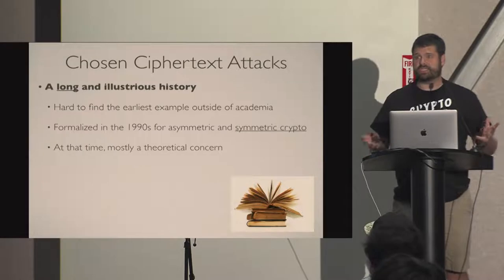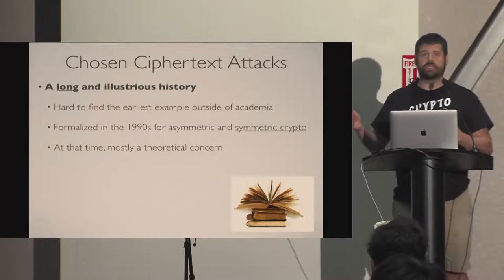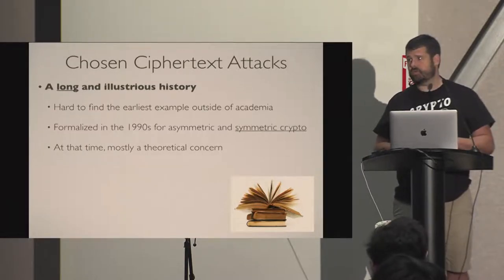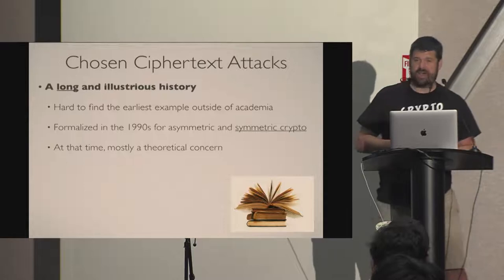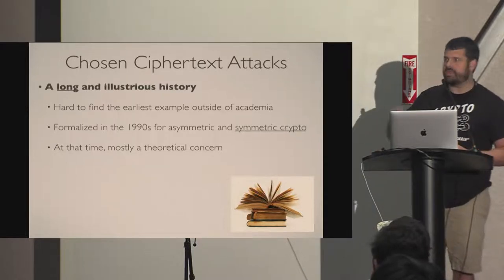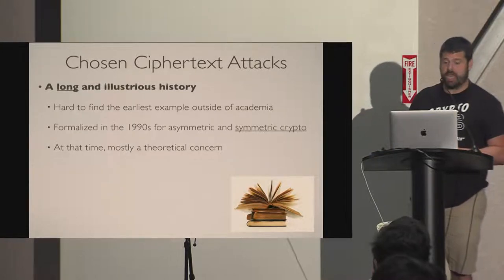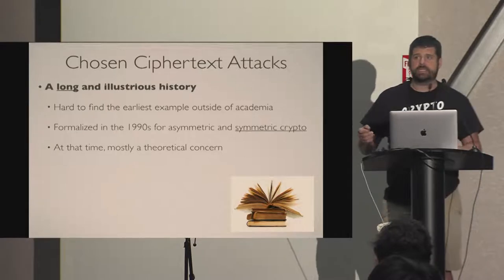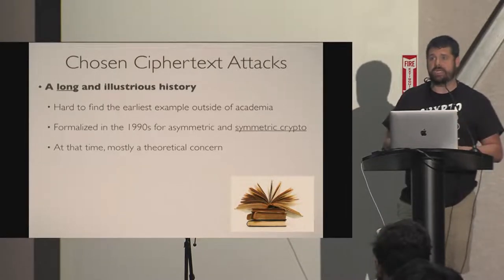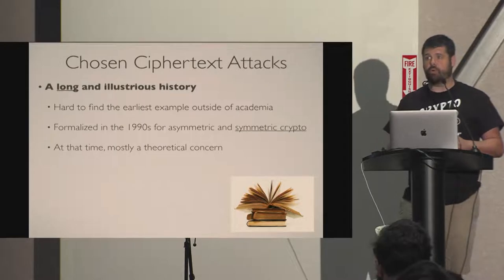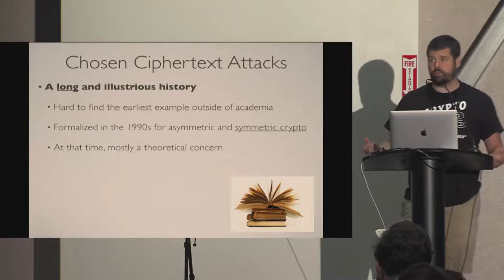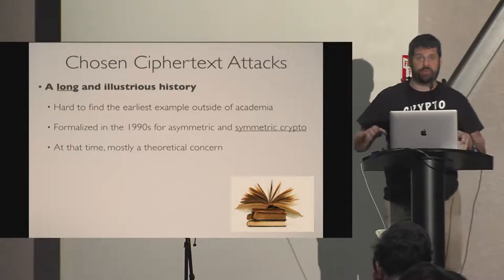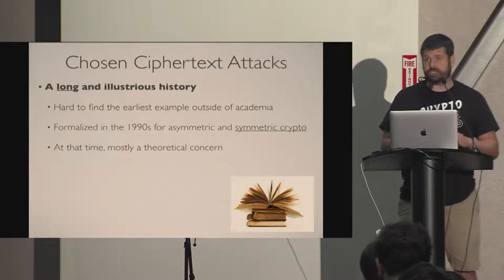Quick background: chosen ciphertext attacks are an old thing. I tried to find the first examples of practical chosen ciphertext attacks in pre-research literature but wasn't really able to find anything before the 90s. Starting around the mid-1990s, and maybe the late 80s, there was formal work in the research community looking at ways to immunize schemes against chosen ciphertext attacks. We came up with models and started to build the groundwork for schemes that were actually secure in this particular model.